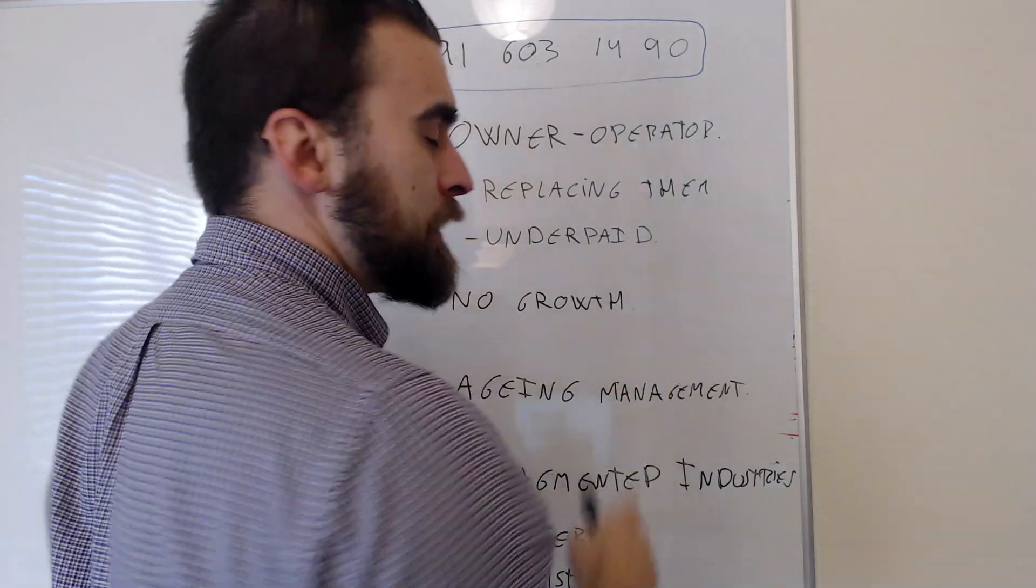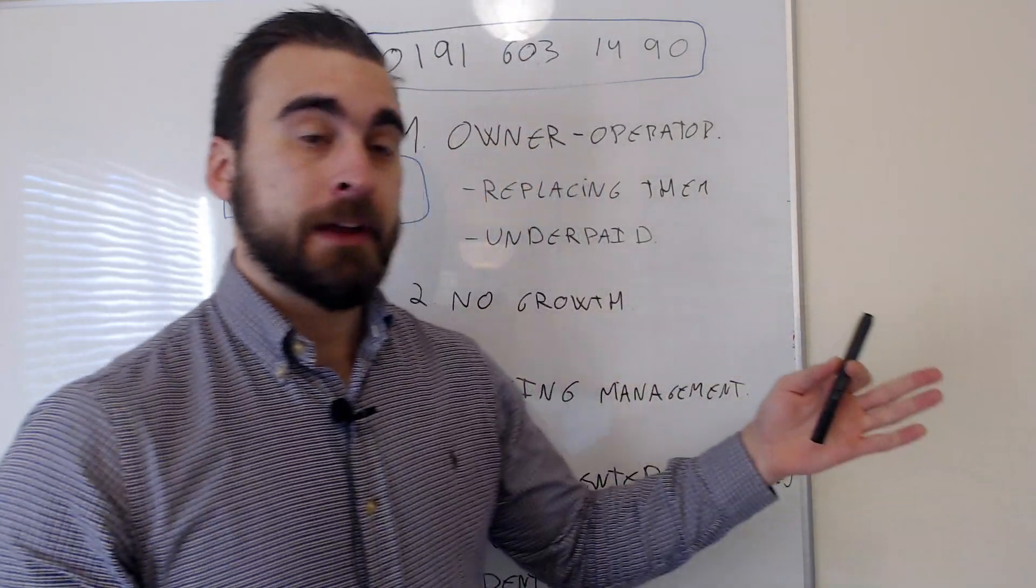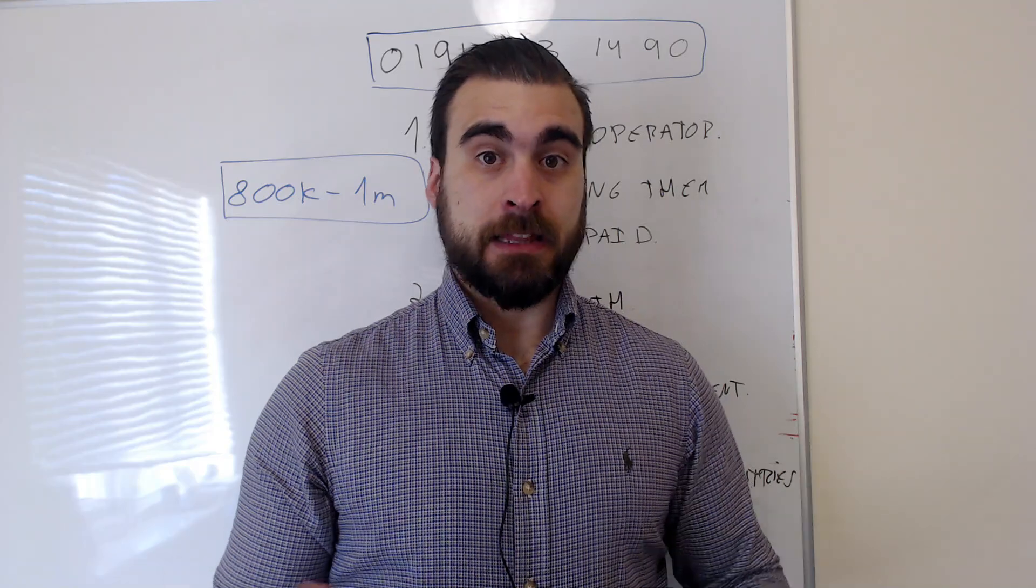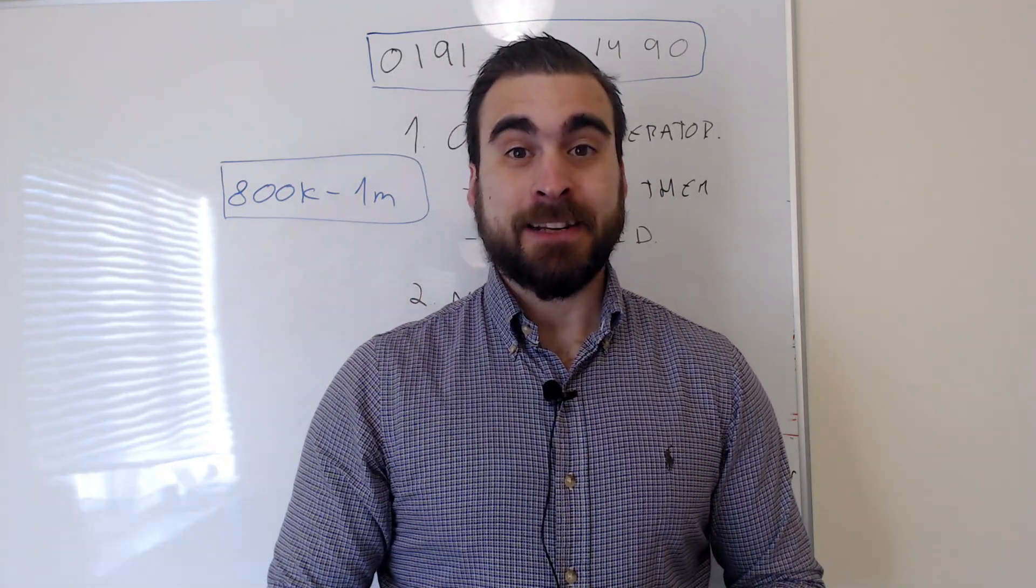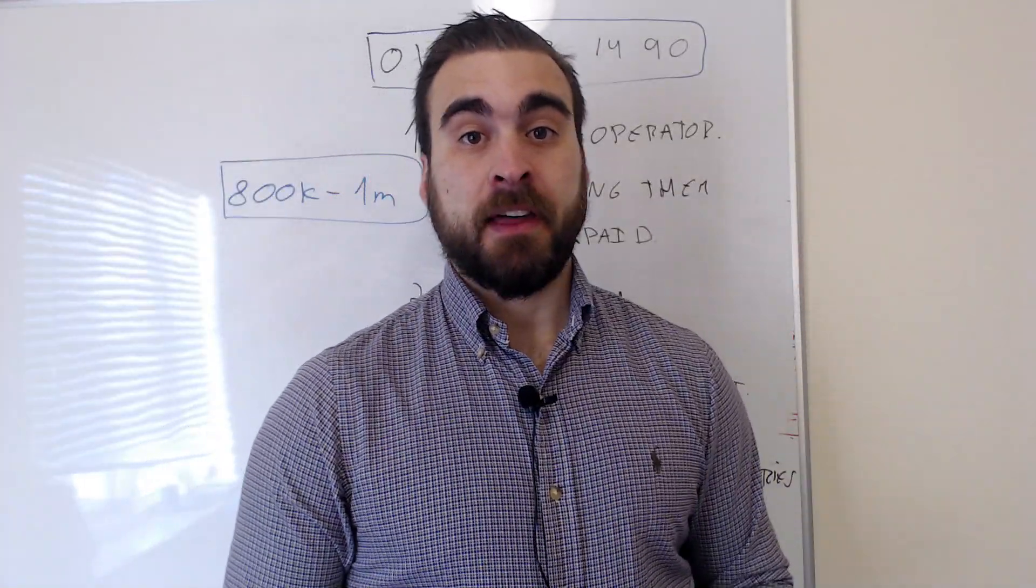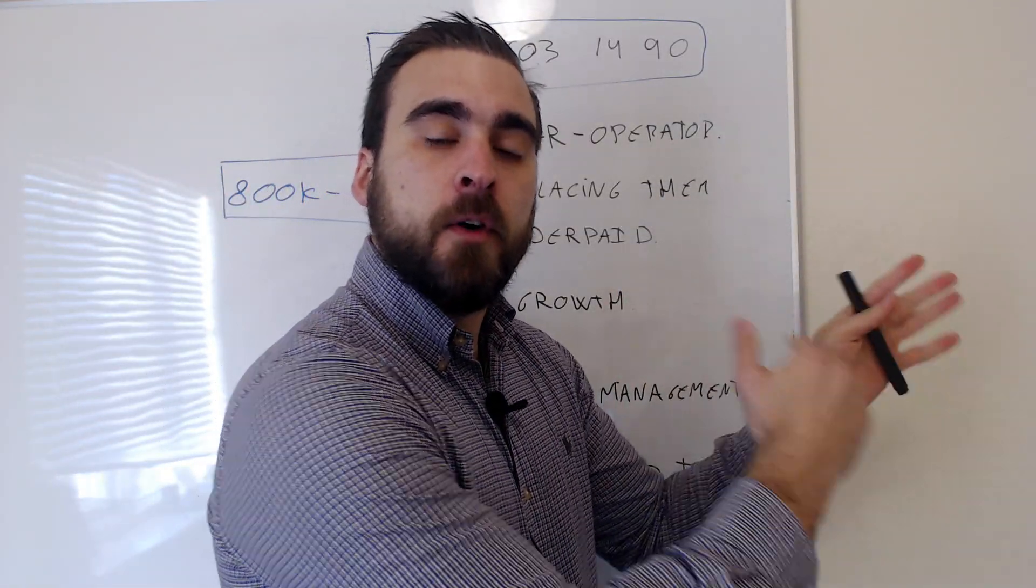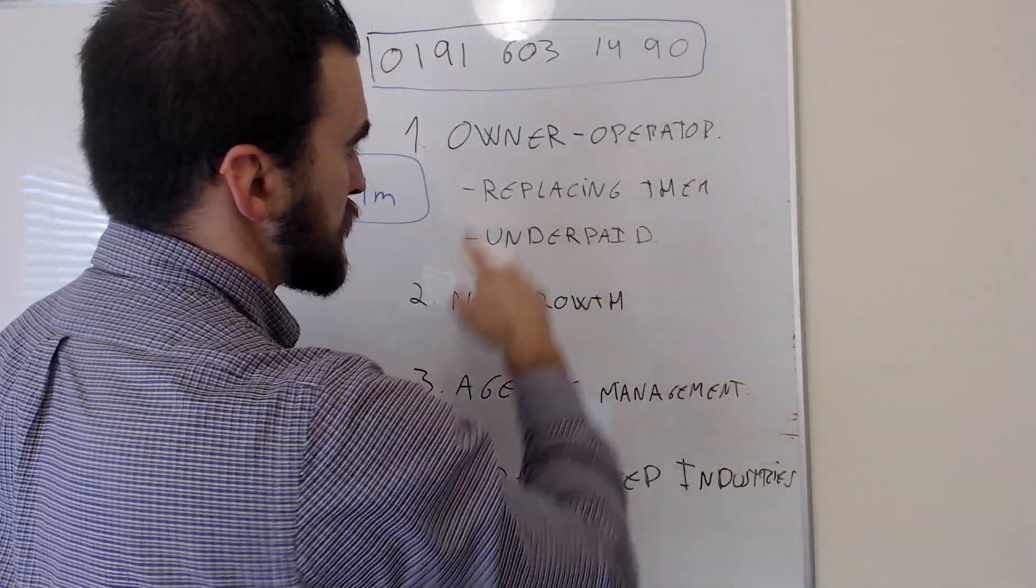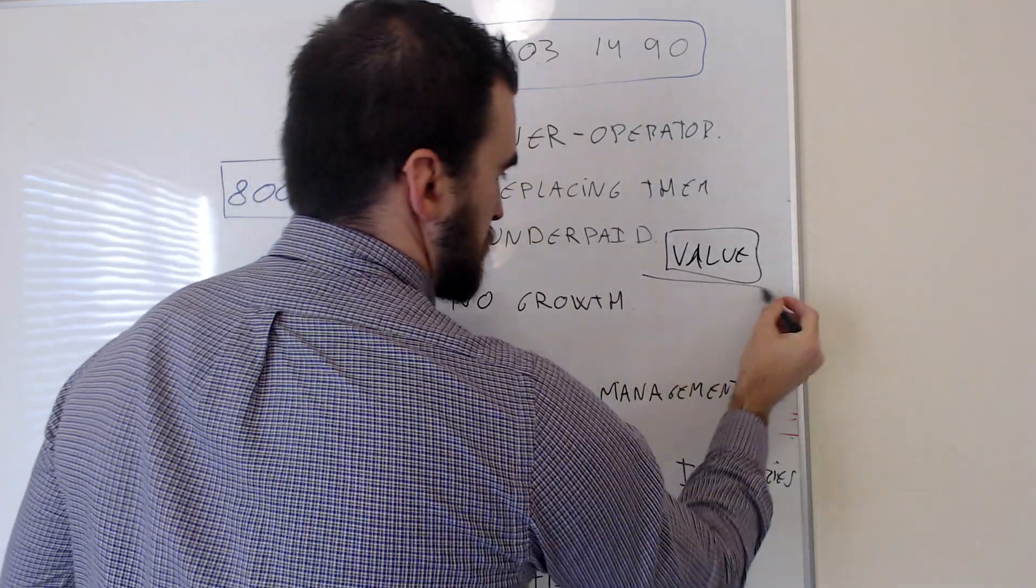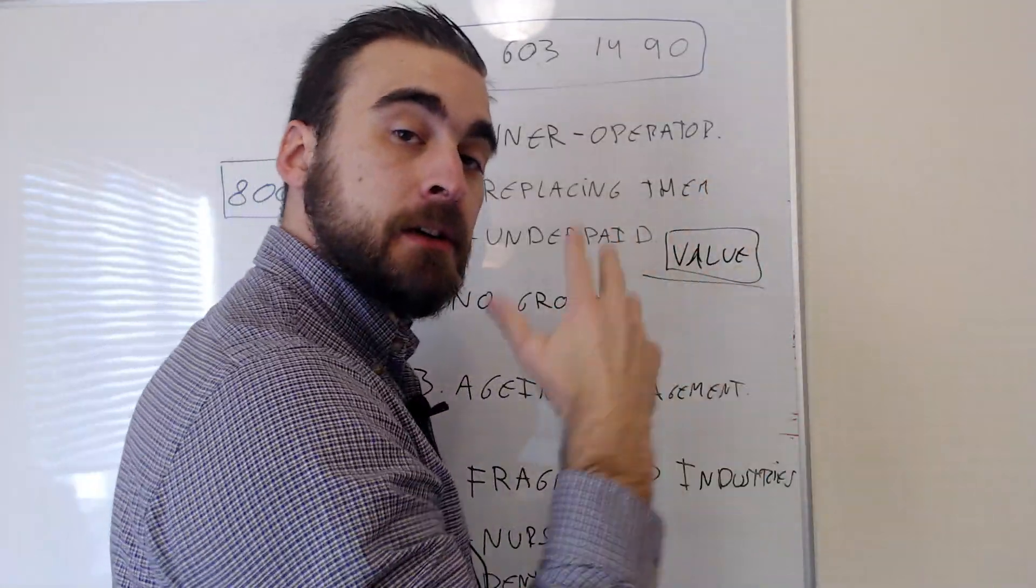The second thing is that they underpay themselves. Irrespective of the EBITDA or the seller's discretionary earnings or the net profit the business makes, these people often underpay themselves. They may take out £13,000 or £20,000 and pay themselves a dividend at the end of the year. However, if one of these companies makes £600,000 or £700,000 turnover and pays themselves £17,000, that's not a fair market wage. You're going to have to readjust the value of the business and make them understand they are underpaying themselves.